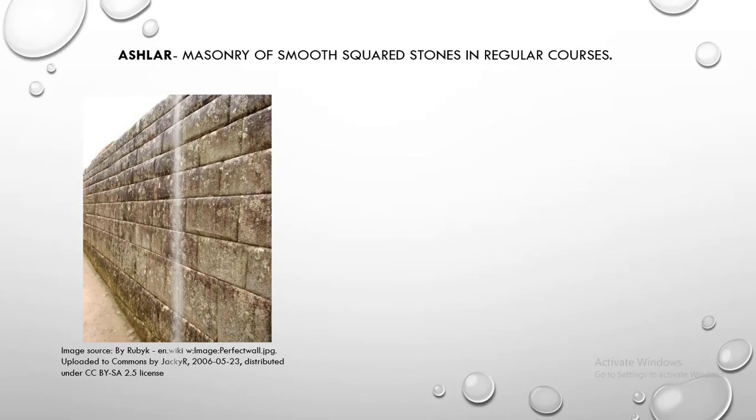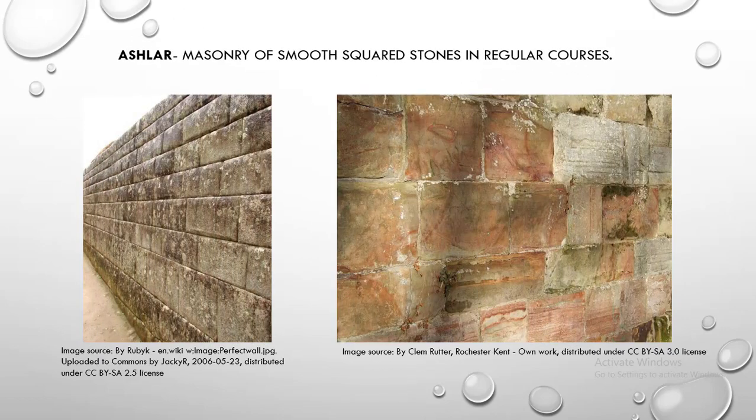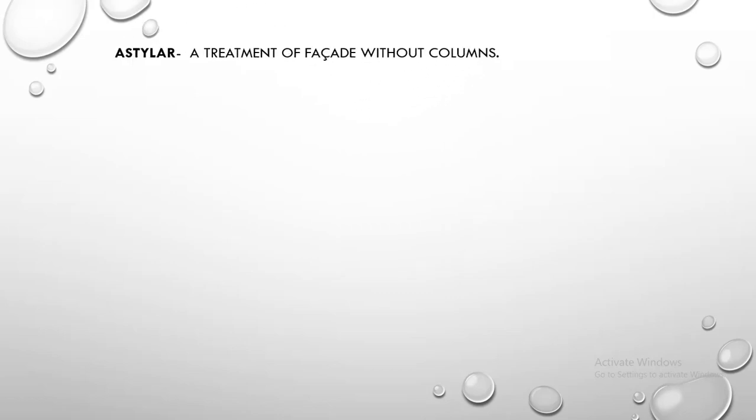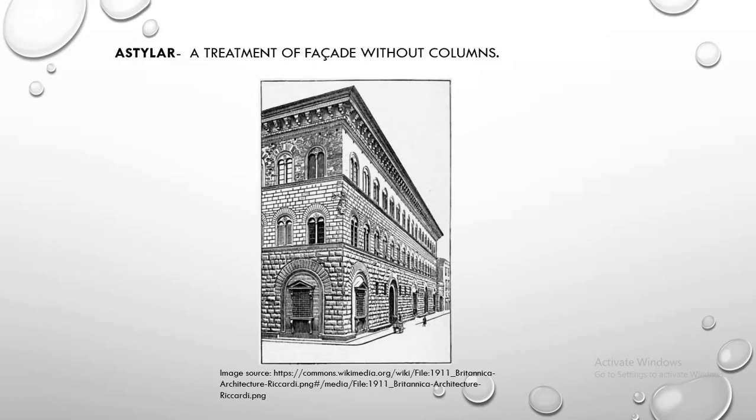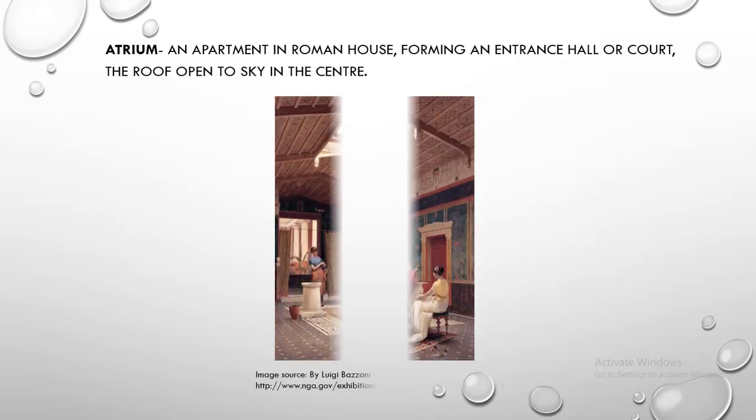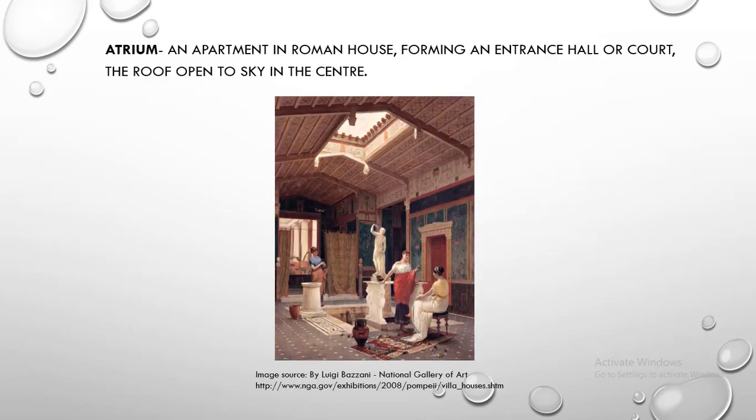Ashlar. Ashlar is a masonry of smooth squared stones in regular courses. Astylar. Astylar is a treatment of façade without columns. Atrium. Atrium is an apartment in a Roman house, forming an entrance hall or court, with the roof open to sky in the center.